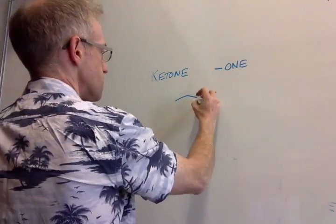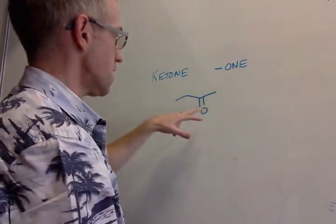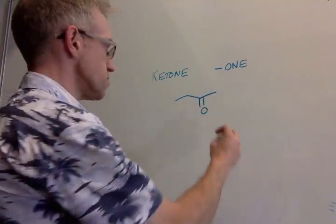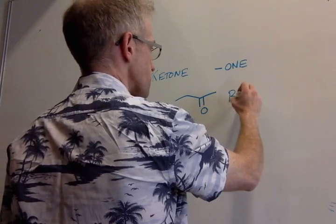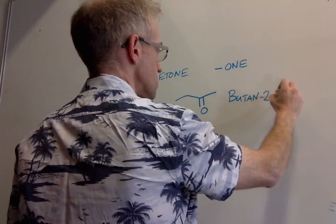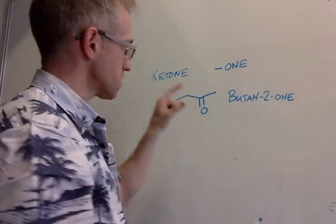for this molecule, this ketone, we have a four carbon chain. And we have our carbonyl group in the two position, if we want to keep the numbers small. So this molecule would be butan-2-one, to show it's the ketone with the carbonyl in that position.